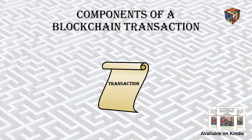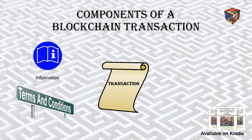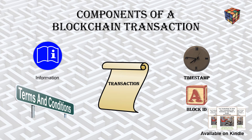So we've seen what a transaction is. What are the components of a blockchain transaction? The transaction starts with the information being recorded. It can add terms and conditions to be part of the contract. There's a timestamp for when the transaction occurs. Finally, there's a block ID, which makes it easy to look up previous blocks once time has gone by.